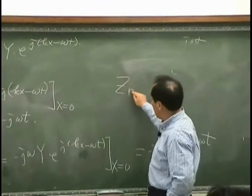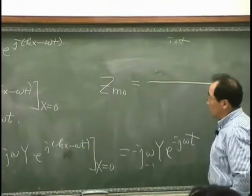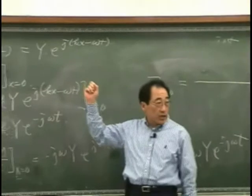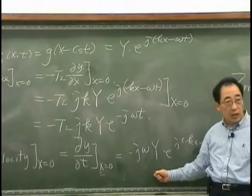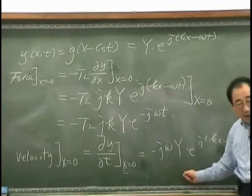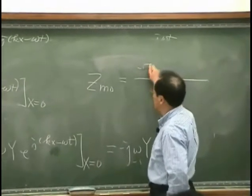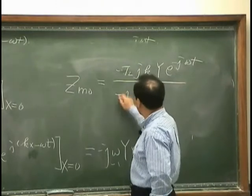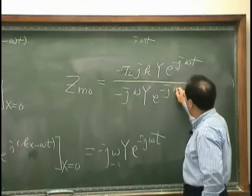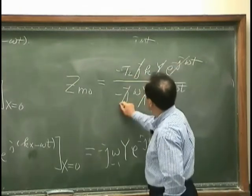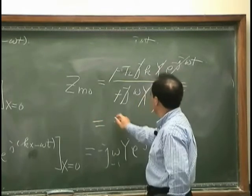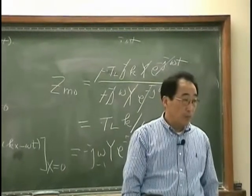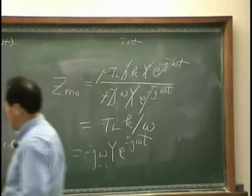Therefore, the mechanical impedance — or driving point impedance — defined as the ratio of force in the y direction at x equals zero to velocity in the y direction at x equals zero, gives: [minus TL·j·k·Y·exp(−jωt)] divided by [minus j·ω·Y·exp(−jωt)]. As you can see, this simplifies to TL·k/ω. That is a very simple result — that is the mechanical impedance.